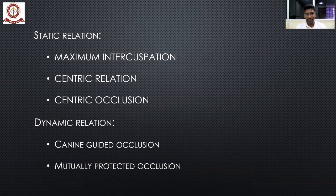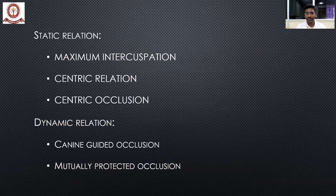Static relation is when you clench the teeth and don't move — the existing relationship between maxilla and mandible is called static relation. Dynamic relation is when the mandible moves in a forward or lateral direction — the relationship between the maxillary and mandibular teeth during that movement comes under dynamic relation.